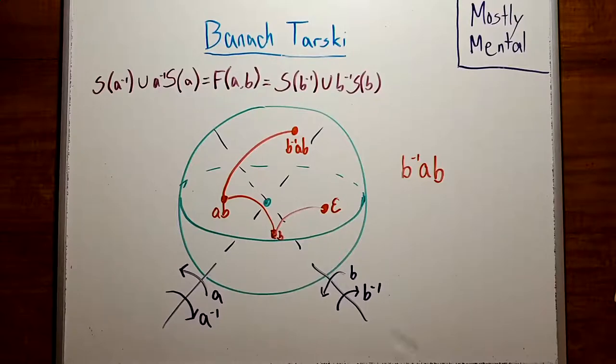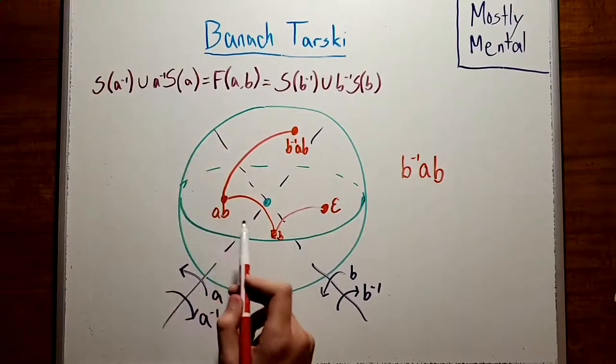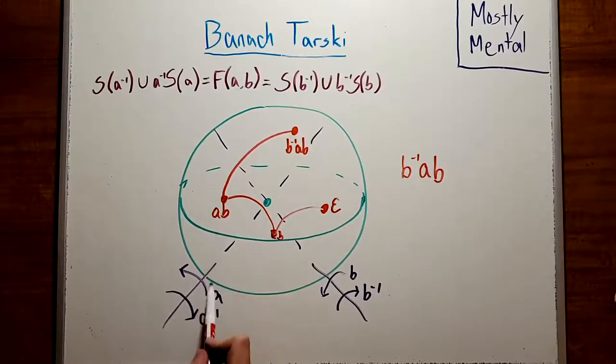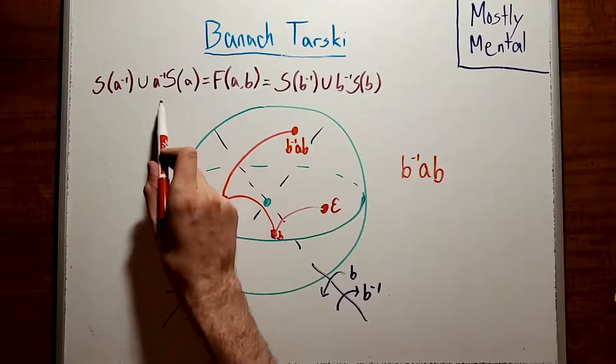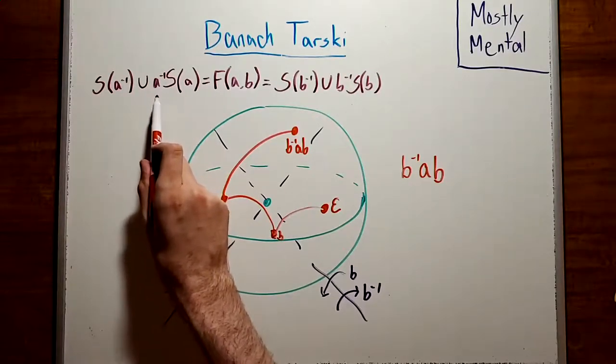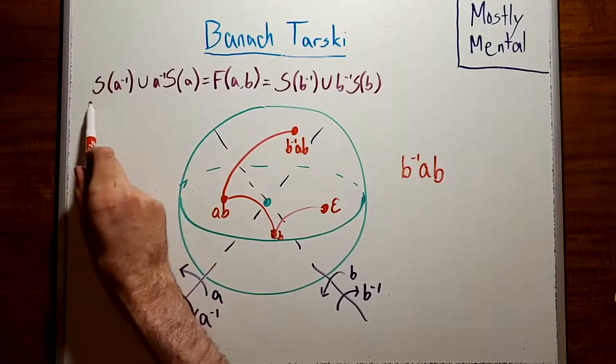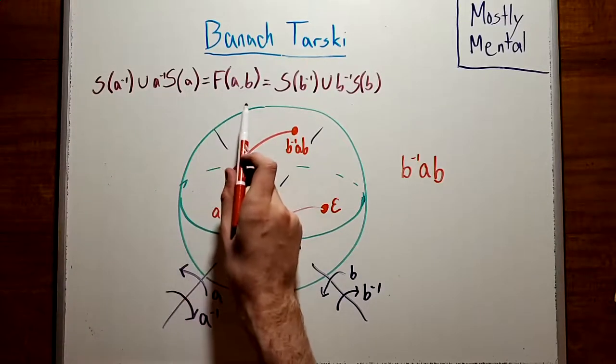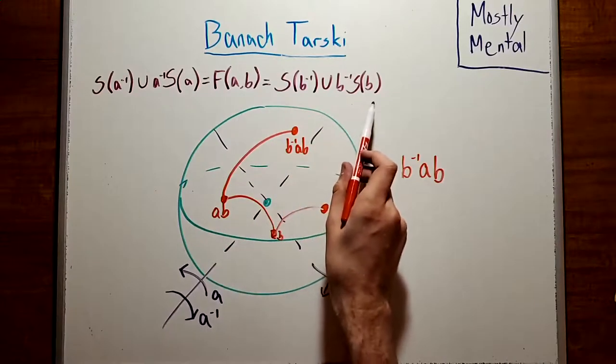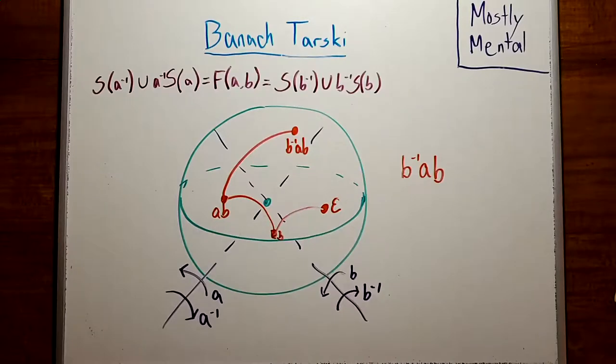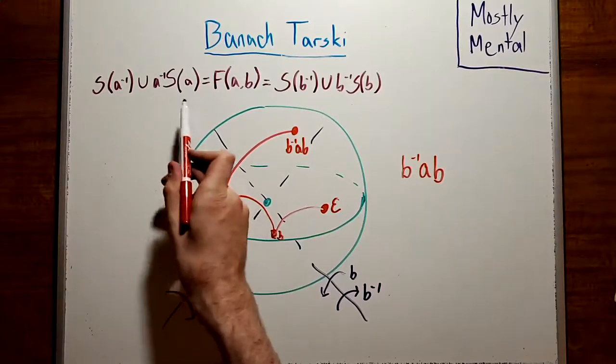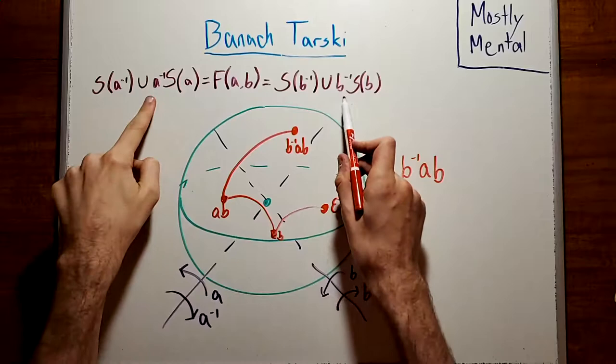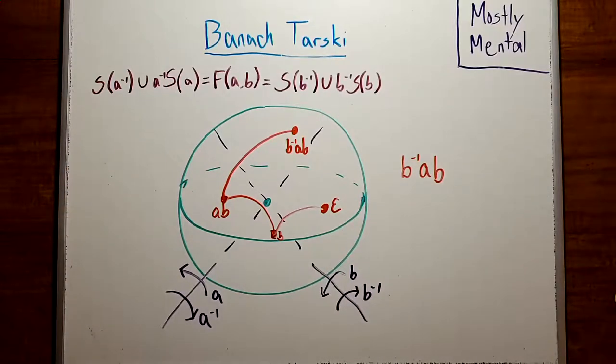And what that means is that we can apply the same construction that we saw earlier to these rotations. We can take the set of points where the first letter is A, and that corresponds to points where the last rotation is around the A axis, and then rotate each of those points by A inverse. And then if we add in all of the points where the first letter is A inverse, that'll give us a copy of our set of points. And if we do the same thing with B and B inverse, we'll get a second copy. So just by splitting the points into four sets and rotating some of them, we've managed to get two copies of our points. That is, we've duplicated the points on the sphere.